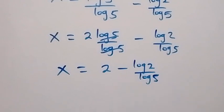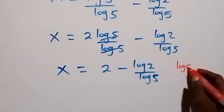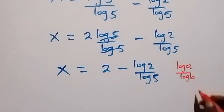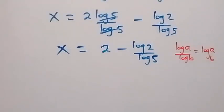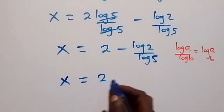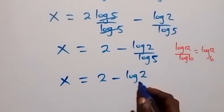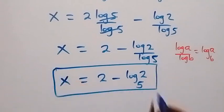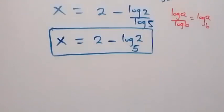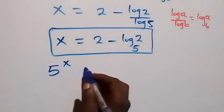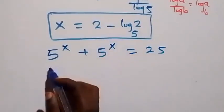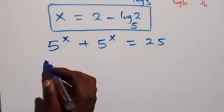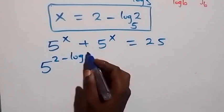We can write this using the change of base rule: log a over log b equals log a to base b. So x equals 2 minus log 2 base 5. This is the value of x in the given problem.